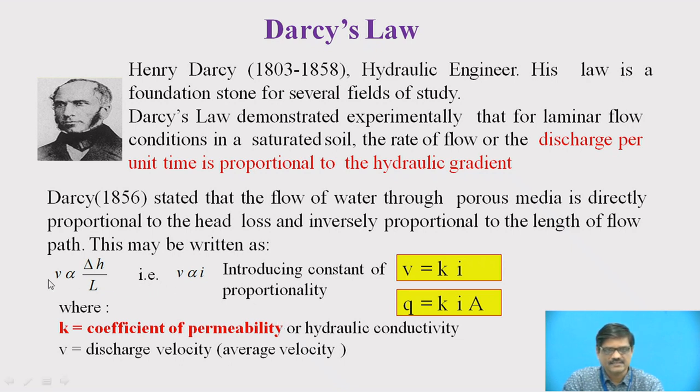This is denoted by the expression: V, the rate of flow, is directly proportional to hydraulic gradient. This hydraulic gradient is the head loss per unit length. Therefore, it is denoted by delta H upon L, and V is proportional to I, which is given by Darcy. To remove this constant of proportionality, we introduce a constant called K. Therefore, we write the equation as V equal to K into I, and this V is Q by A.